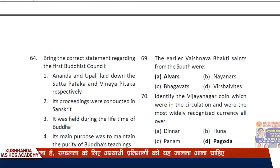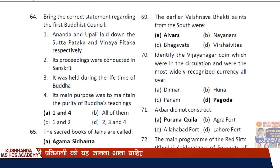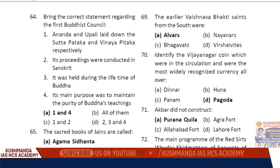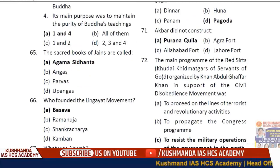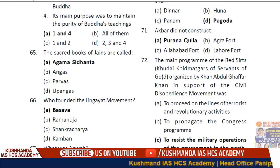Question 62: Regarding the First Buddhist Council — Ananda and others laid down the Sutta Pitaka and Vinaya Pitaka. The purpose of the First Buddhist Council was to maintain the purity of Buddhist teachings — option A. The sacred books of Jains are called Agam Siddhant.